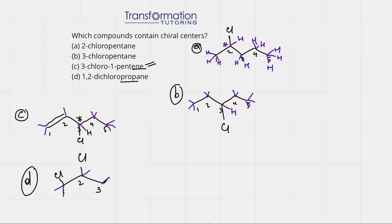Carbon 3 has three hydrogens, so we can disregard it. Carbon 1 has two hydrogens — can't be it. Let's look at carbon 2. It has a chlorine and a hydrogen. On the left it has a carbon connected to a chlorine, and on the right it just has a methyl group — CH3. Are they different? Yes. So this carbon is a chiral center because it is connected to four different groups: a chlorine, a hydrogen, a carbon with a chlorine, and a methyl group. This is Maya Alochi, and I really hope that you found this lesson helpful.